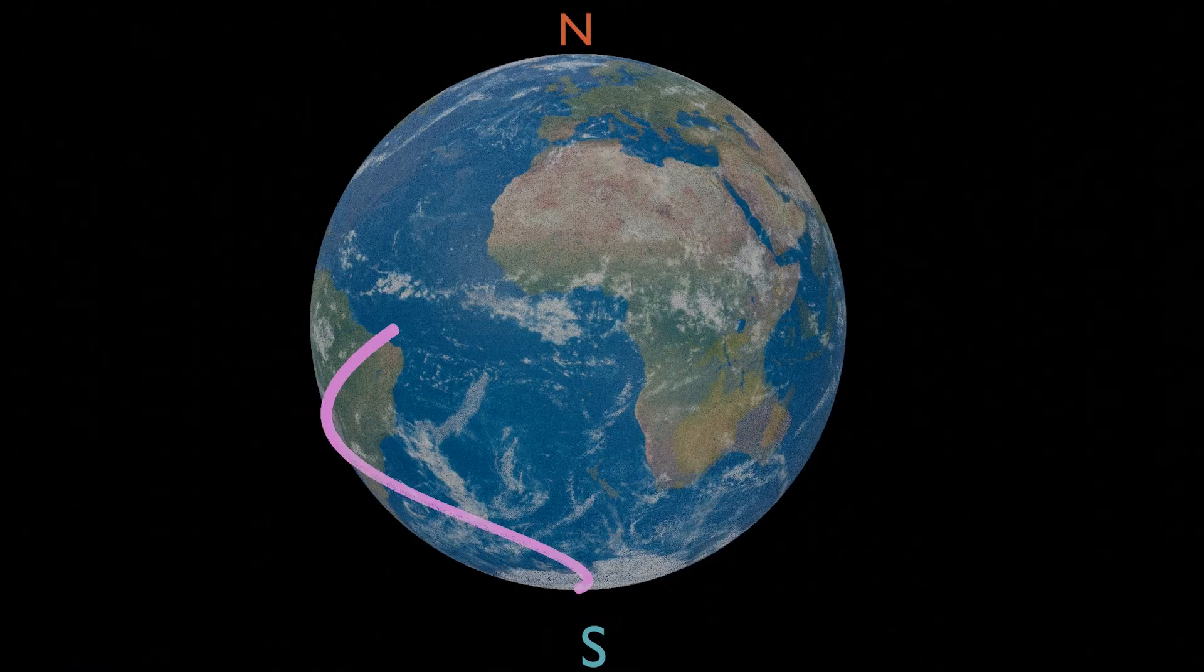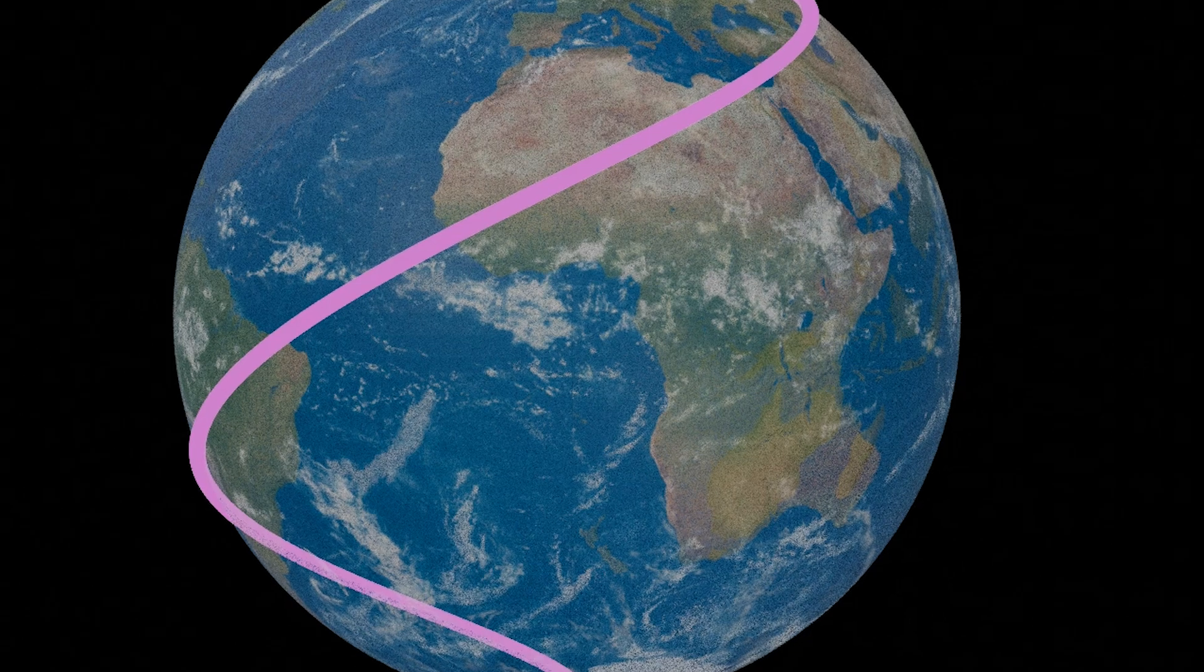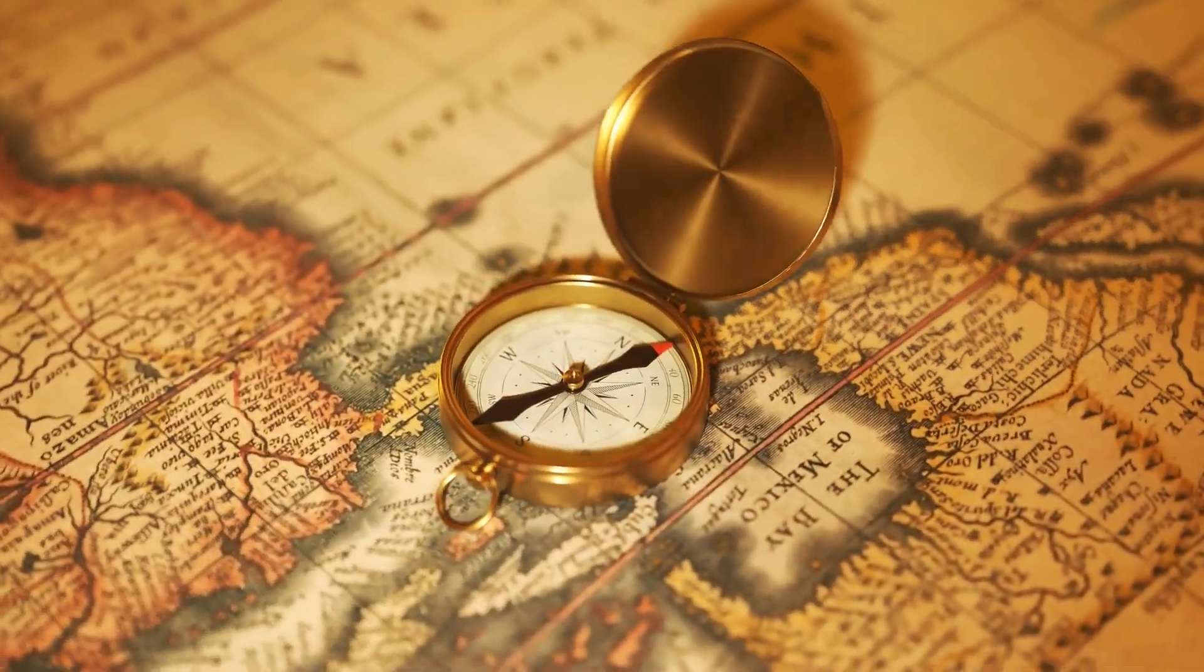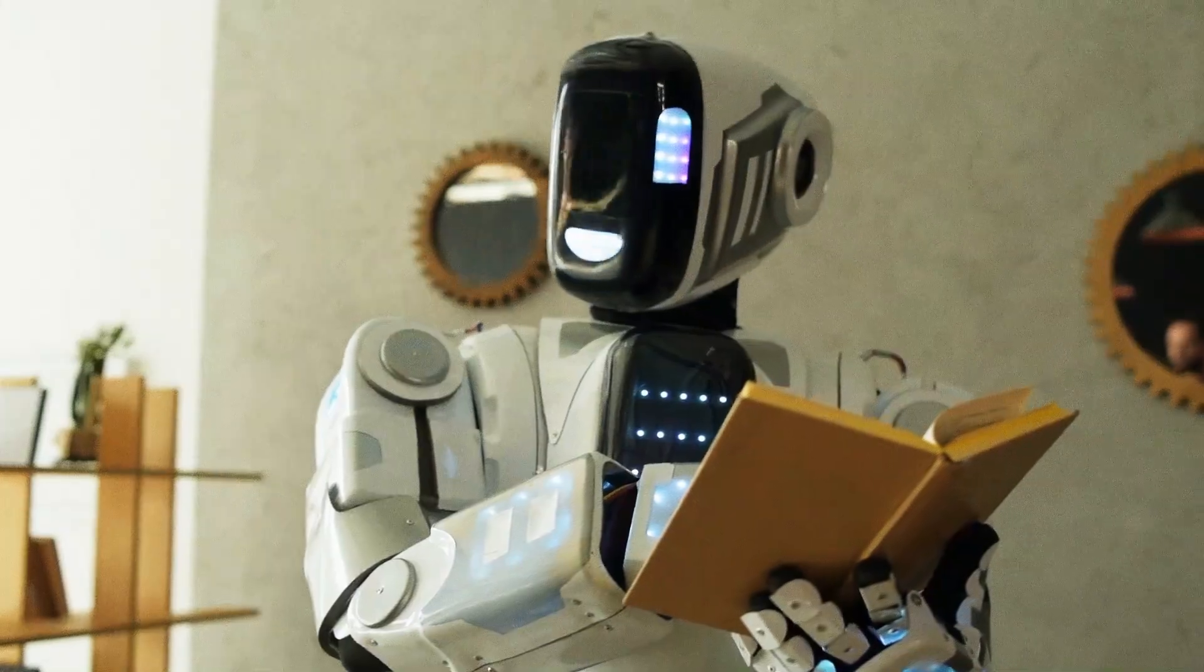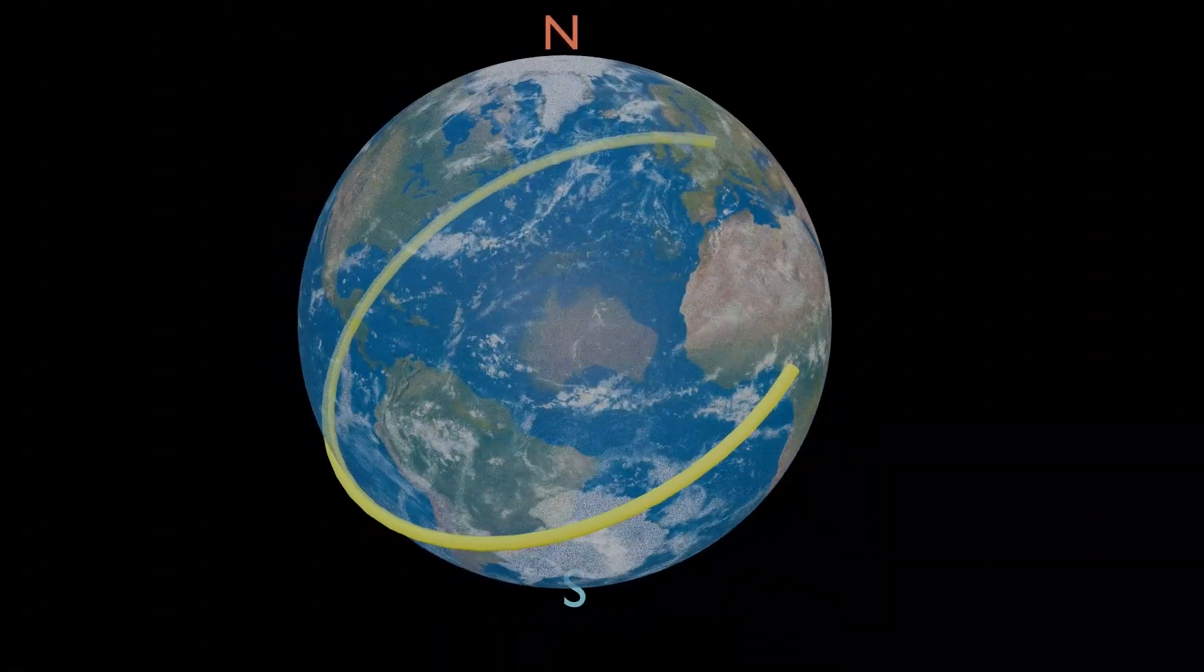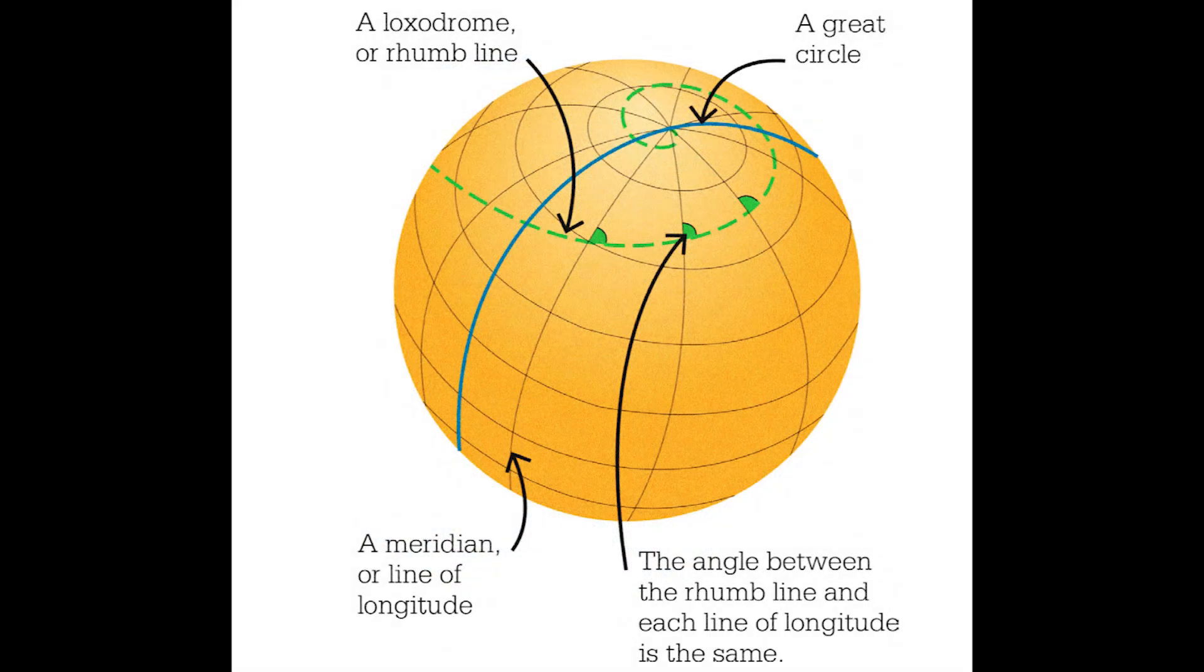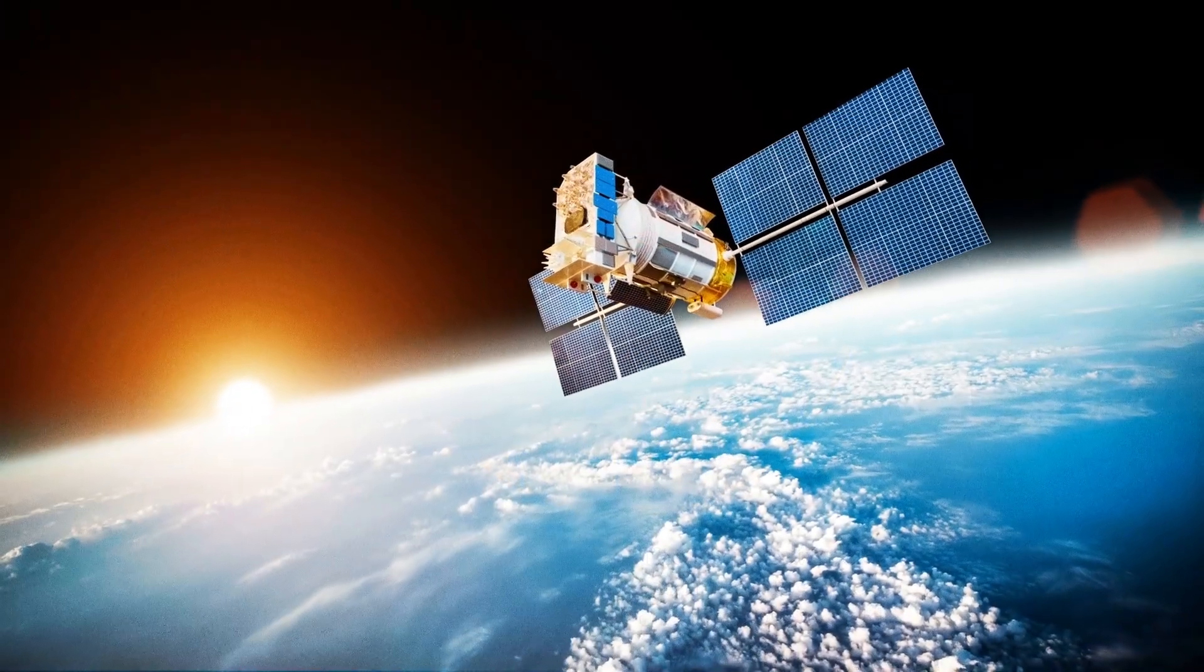In today's world, loxodromes have less prominent usage than in the era of navigation by compass alone. With technological advancements, great circle routes provide the most efficient navigational paths. It only became practical to follow a great circle course after the invention of GPS.